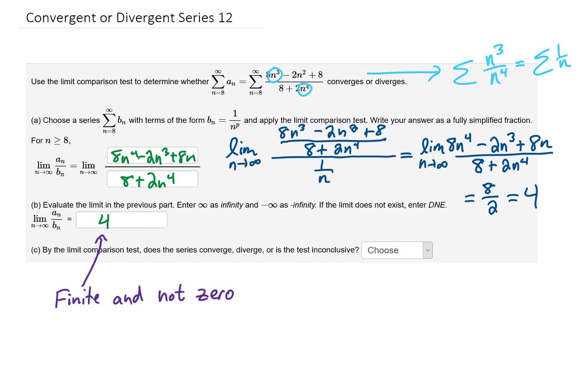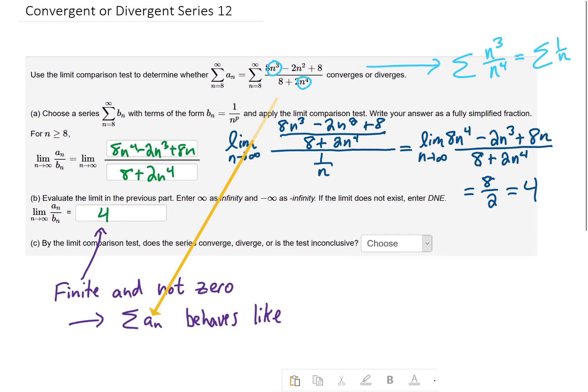Now this limit that we found is finite and it's also not zero. So what the limit comparison test says is that our original sum and the sum of bn, the sum that we are comparing to, behave the same. They either both converge or they both diverge.